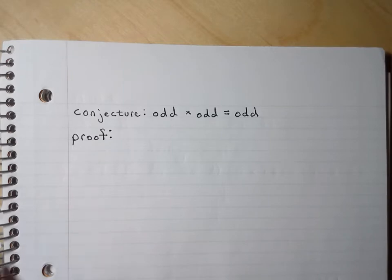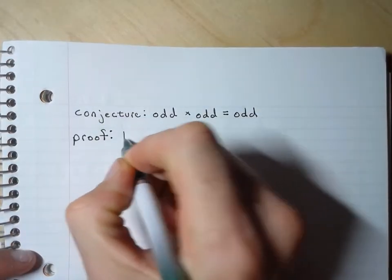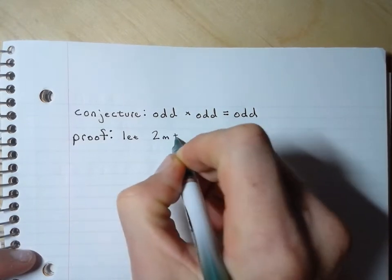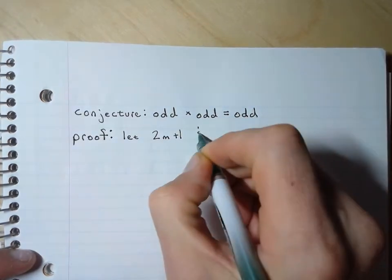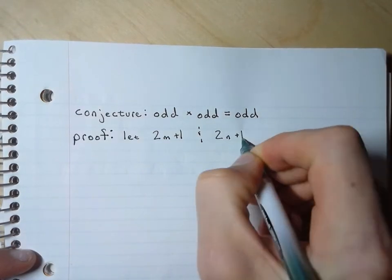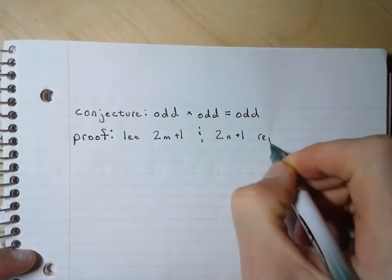Here's the proof. Let 2m plus 1 and 2n plus 1 represent odd integers.